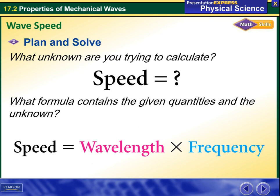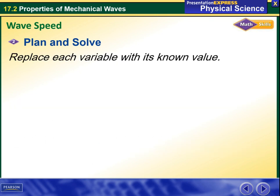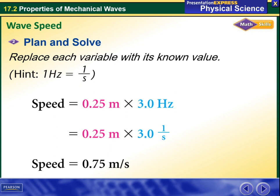Once we substitute those into the wavelength and the frequency, we're going to have the speed. So speed equals 0.25 meters times 3 hertz, which equals 0.75 meters per second.